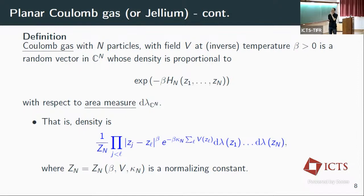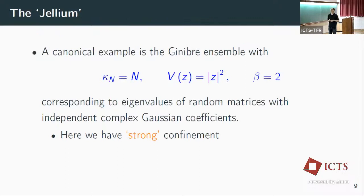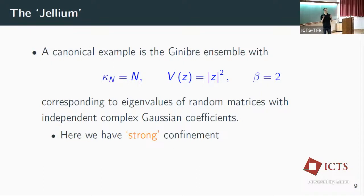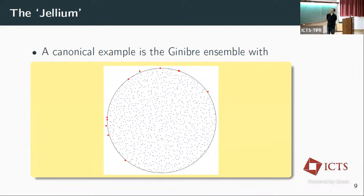One canonical example is to take the external field to be just |z|², which corresponds to having a uniform background of positive charge everywhere in the plane. Beta equals 2, and this corresponds to eigenvalues of random matrices. But the confinement here is very strong — effectively infinite positive charge — so the system is not even very physical. It might make more sense to look at the physical system where the charge is finite. That's the picture we see from the GinUE ensemble.